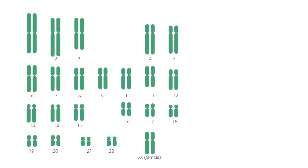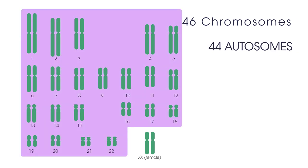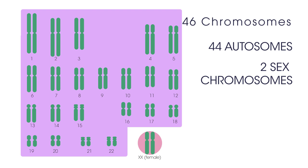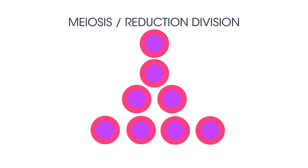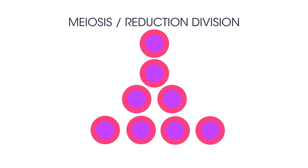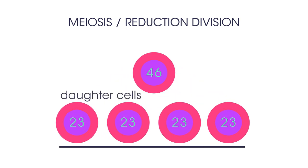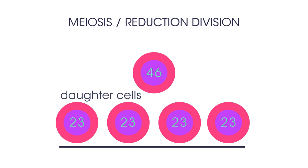Humans usually have 23 pairs of chromosomes — 46 in total — 44 autosomes and 2 sex chromosomes. Sex cells are produced in the type of cell division called meiosis, or reduction division. In humans, meiosis produces 4 daughter cells that each have 23 chromosomes, half the number of a somatic cell.